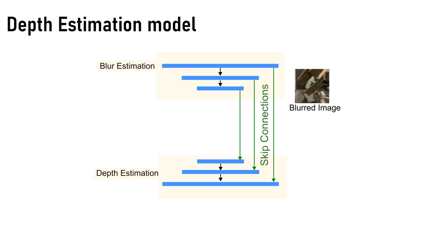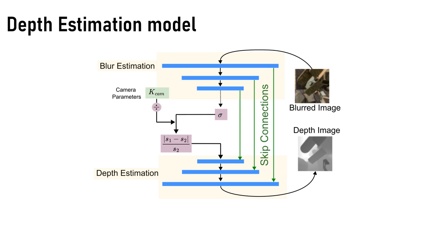Now we have estimated the Kcam value for a given camera and how to use this in our depth estimation model. We start with the blurred image and send that blurred image into a blur estimation model, which is a CNN-based model. It gives us the sigma value. To remove the camera dependence of the sigma value, we divide it with the estimated Kcam value to get the quantity absolute value of (S1 minus S2) divided by S2, which does not depend on Kcam. We input this into our depth estimation model, which is again a CNN-based model, to get the depth image. This depth image represents the depth at each pixel.